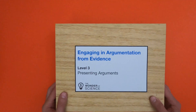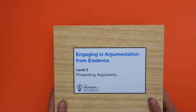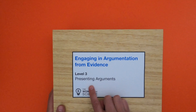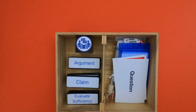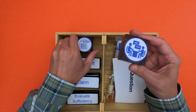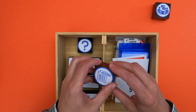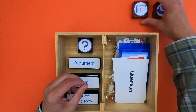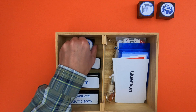Hi, it's Mr. Andersen and this is a mini lesson on engaging in argumentation from evidence, Level 3: Presenting Arguments. When you're presenting an argument, an argument should always be based in evidence, and in this video we're going to go through a lot of evidence and see how you can evaluate that evidence.